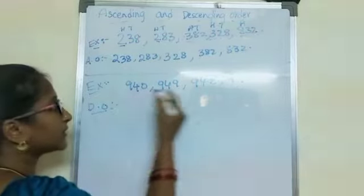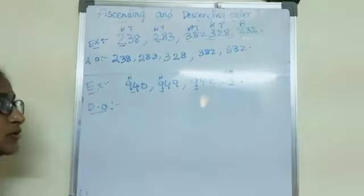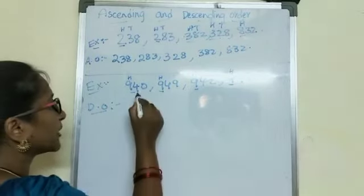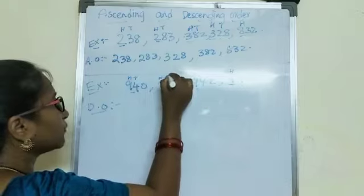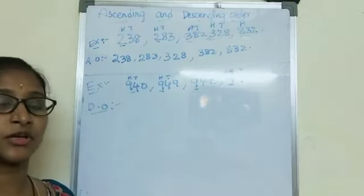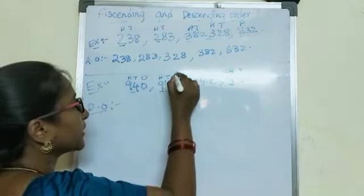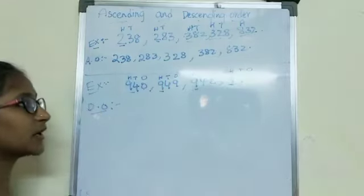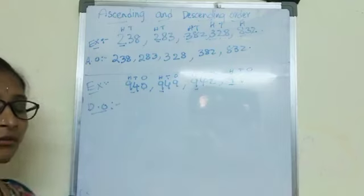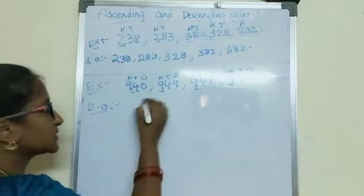Let us check the hundreds place. Here hundreds place is 9, in this number also 9, in this number also 9, this number also 9. I told you when hundreds place is the same in all numbers, we should go to tens place. Let us check the tens place. Here tens place is 4, here also 4, in this number also 4, in this also 4. All 4 numbers have the same tens place too. So, hundreds place is same, tens place is same — let us go and check the ones place. Here ones place is 0, here ones place is 9, here ones place is 2, and here ones place is 6. I am arranging in descending order — big to small. The biggest ones digit is 9, so first number is 949.